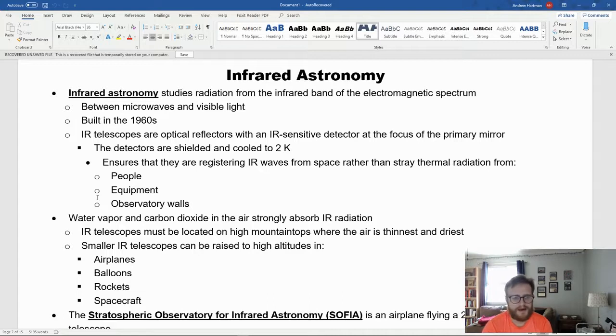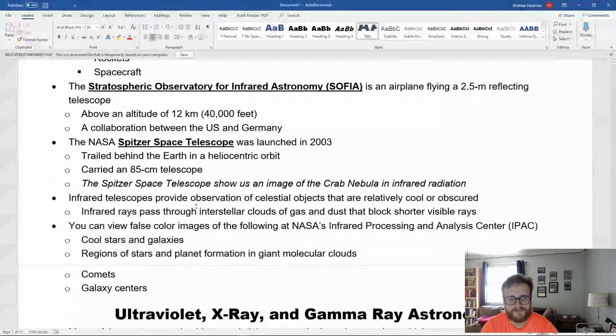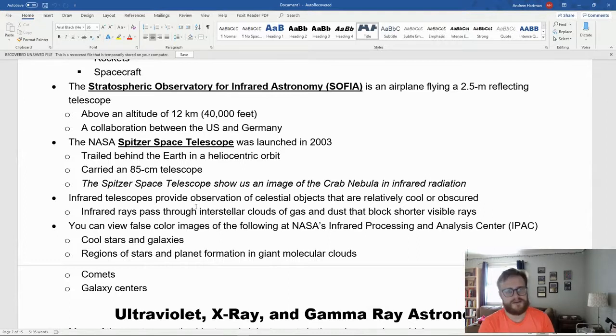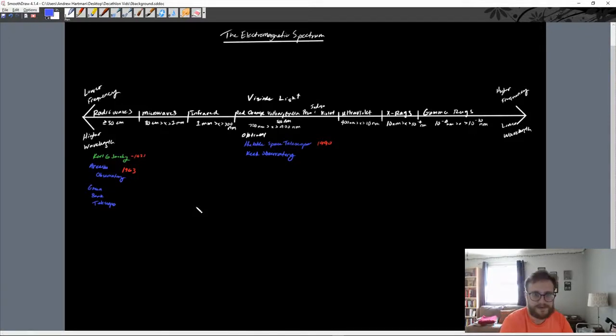Another problem with infrared astronomy is that water vapor and carbon dioxide strongly absorb infrared radiation, which means we'd get a poor image. Because of that, we put infrared telescopes on high mountain tops because air is thinner and drier there. We even put them in airplanes, balloons, rockets, and spacecraft to get the best infrared images possible. The Stratospheric Observatory for Infrared Astronomy, SOFIA, is an airplane that flies a 2.5-meter reflecting telescope at an altitude of about 40,000 feet or 12 kilometers—a collaboration between the United States and Germany. We also have the NASA Spitzer Space Telescope, launched in 2003, which trails behind Earth in a heliocentric orbit. It carries an 85-centimeter telescope.